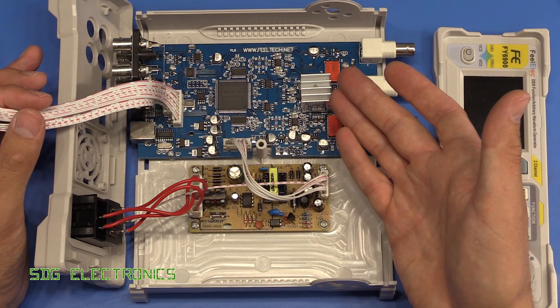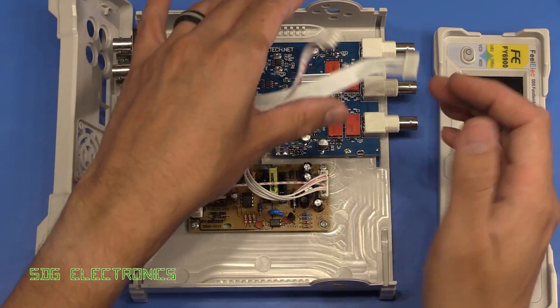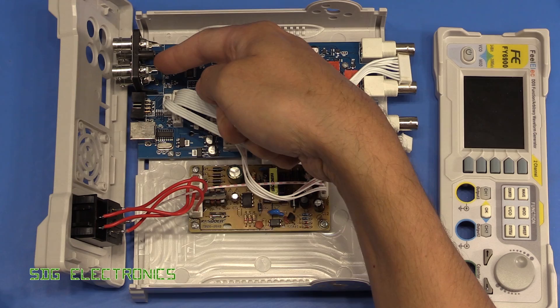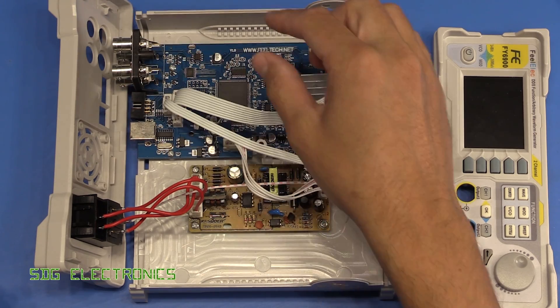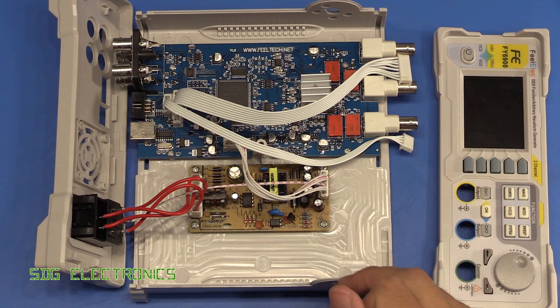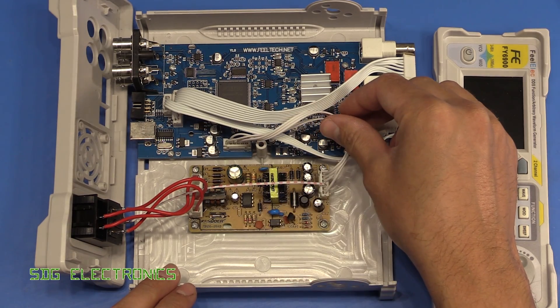Then we've got the actual signal generator PCB which we'll have a look at in a minute with the BNCs mounted on there. Those do actually look like nice high quality connectors, nice and rigid onto the PCB, the USB interface, some digital inputs and outputs, and then we've got the power supply.